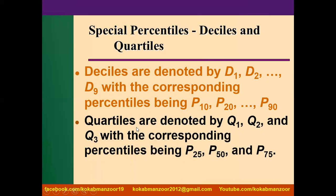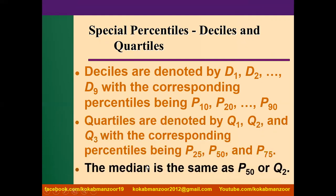Similarly, quartiles: Q1 = P25 (one-fourth of the data), Q2 = P50, and Q3 = P75. So if an exam question asks whether Q3 is greater than P75 of the same data, the answer is no — they are equivalent. Also remember: the median is always equal to P50 or Q2. These types of statements often appear in MCQs, so don't be confused — simply remember these equivalences.